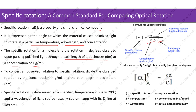Specific rotation is determined at a specific temperature, usually 20°C, and a wavelength of light source, usually a sodium lamp with D-line at 589 nanometers. The formula for specific rotation: alpha (specific rotation in degrees) equals alpha observed (observed rotation) divided by c (concentration) times l (path length in decimeters).